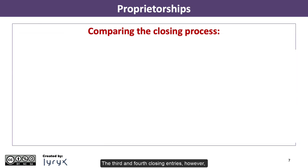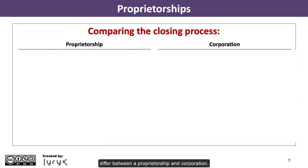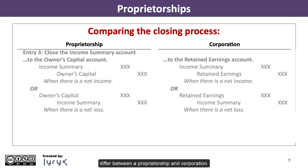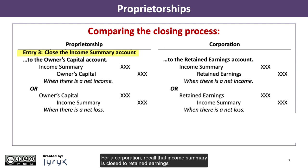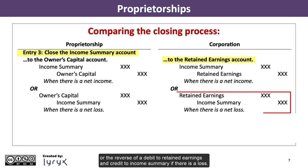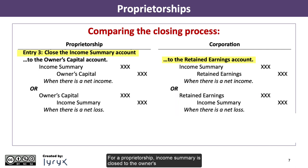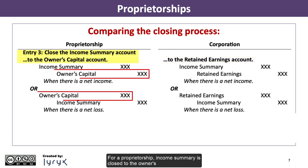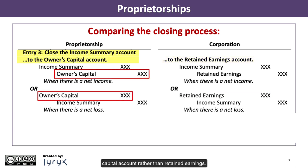The third and fourth closing entries, however, differ between a proprietorship and corporation. For a corporation, income summary is closed to retained earnings with a debit to income summary and credit to retained earnings when there is net income, or the reverse when there is a net loss. For a proprietorship, income summary is closed to the owner's capital account rather than retained earnings.